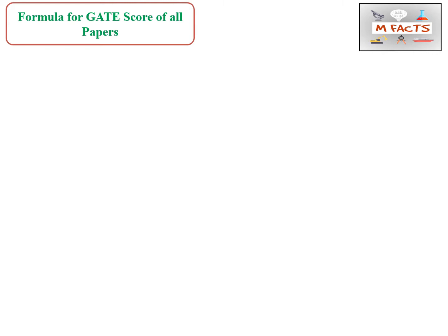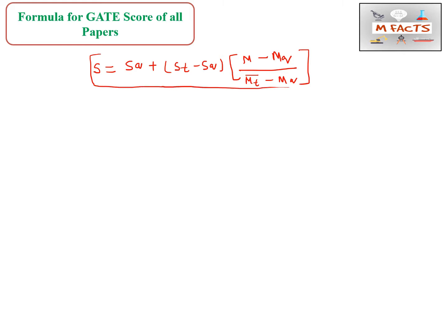There is a formula given by the GATE authorities for the calculation of GATE score for all papers. The formula is: S = Sq + (St − Sq) × (M − Mq) / (M̄t − Mq), where we use a bar on M̄t. This is the standard formula by which we can calculate the GATE score for every paper.